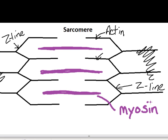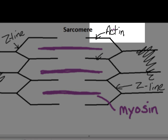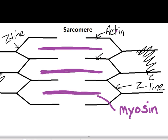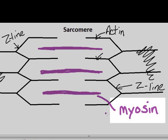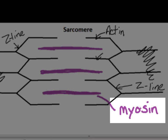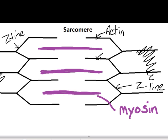An easy way to remember: the letters T and I in actin are tall, thin letters, and T and I are also found in the word 'thin' — so actin is the thin filament. Myosin has short, squatty, fat letters — the O and the S — so myosin is the thick filament.